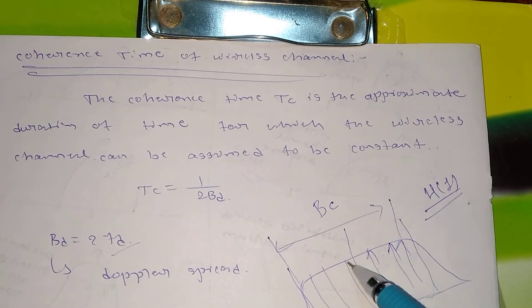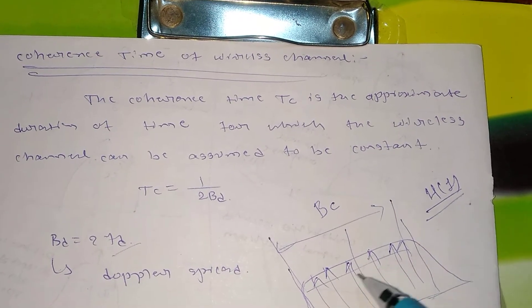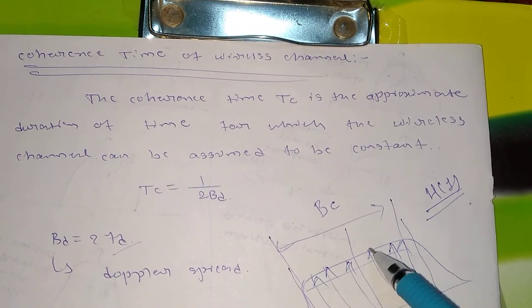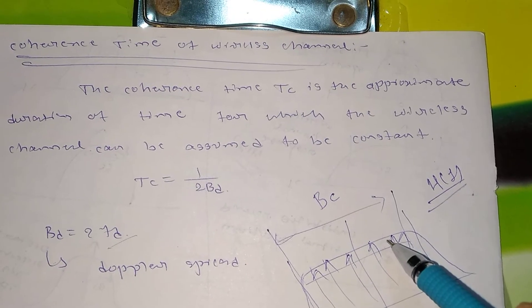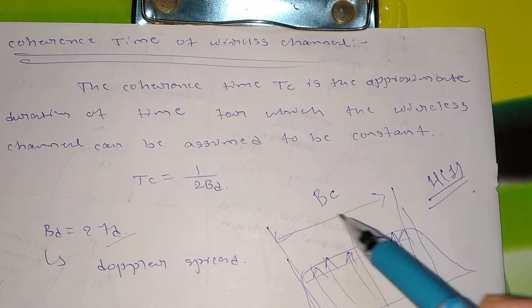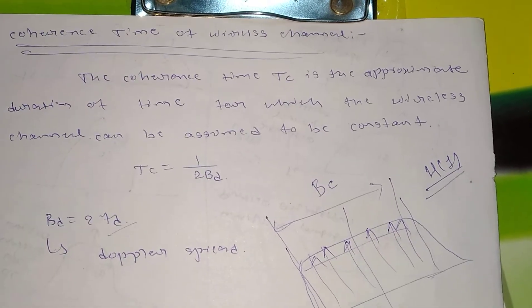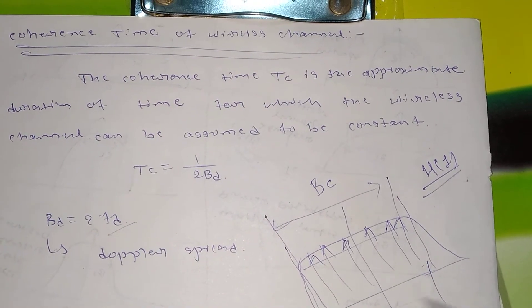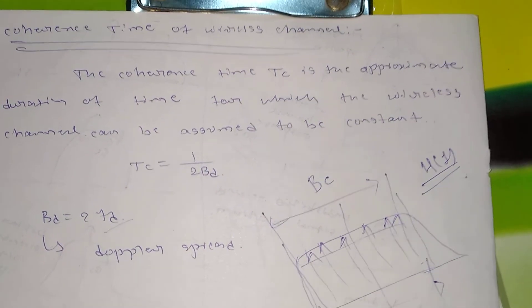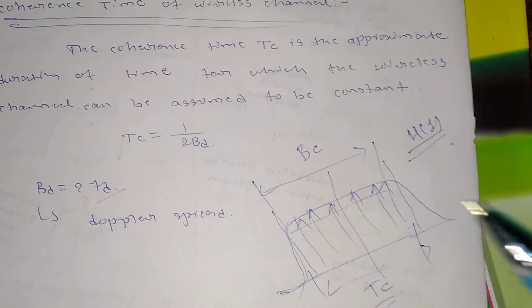I mean here we will be having similar frequency components, so they will be giving a similar response. That's why I will be having a flat curve here. So now this is coherence bandwidth. The corresponding time for the coherence bandwidth we will be calling it as coherence time, denoted as Tc.